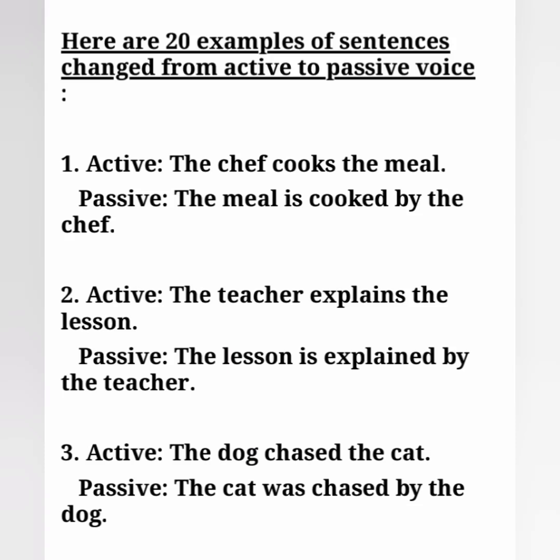Here are 20 examples of sentences changed from active to passive voice. Active: the chef cooks the meal. Passive: the meal is cooked by the chef. Active: the teacher explains the lesson. Passive: the lesson is explained by the teacher.